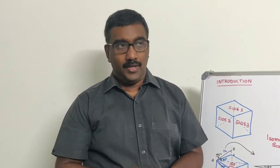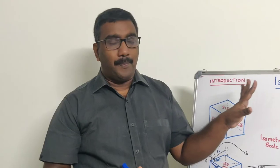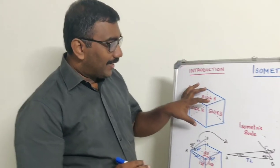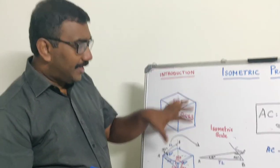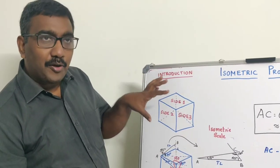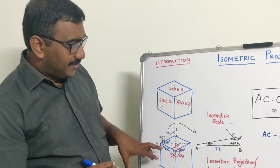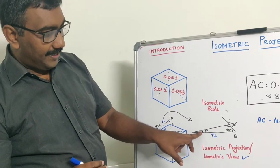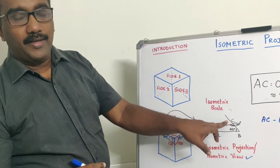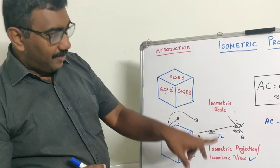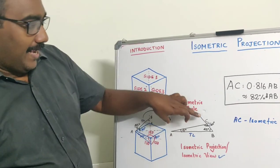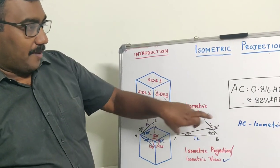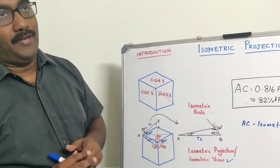You should understand the difference between isometric projection and isometric view. In isometric projection, using a scale, you are reducing the dimension. In isometric view, you are using actual dimensions. These are some of the preliminary ideas of isometric projection. I have told you how we get a cube with three sides visible in a particular view, and using those three faces, we arrived at the construction of the isometric scale: here it is 15 degrees, here it is 45, and here it is 120. We found that AC, the isometric dimension of AB, is 82% of AB.